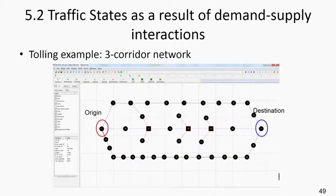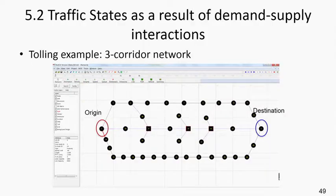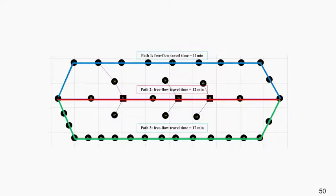You might say this is quite simple in terms of route choice, because typically we have multiple routes and multiple iterations in standard traffic assignment. In the next small example, I would like to show you the three-corridor example with tolling information. In this example, origin one to destination two, we have the physical free flow travel time of 11 minutes, 12 minutes, and 17 minutes.